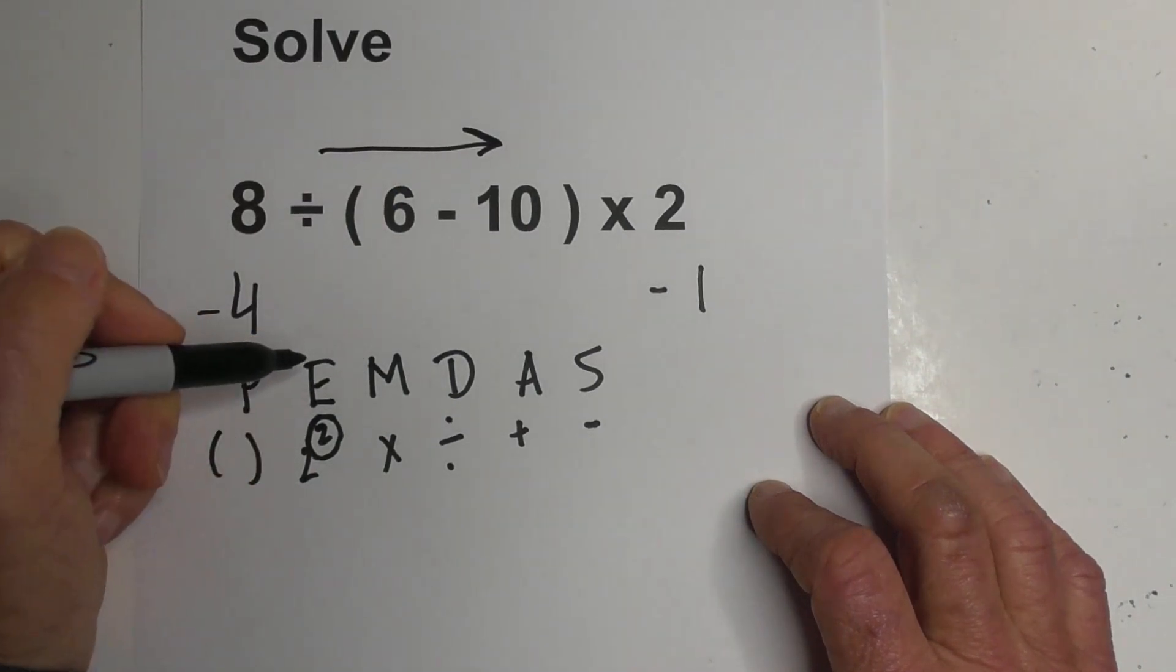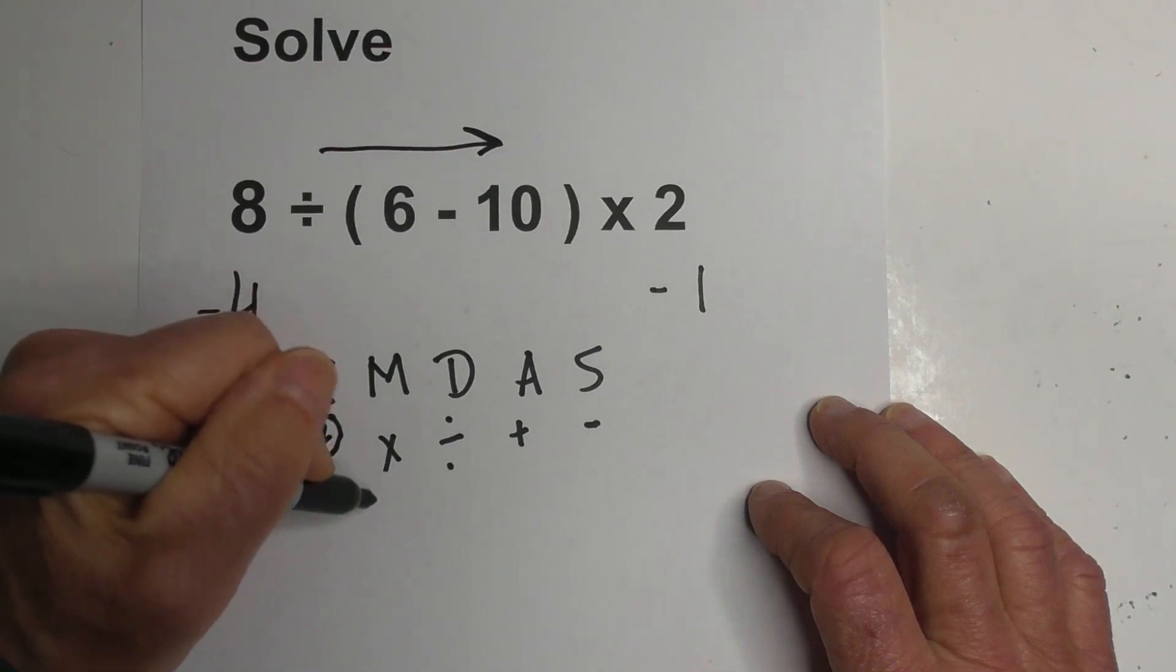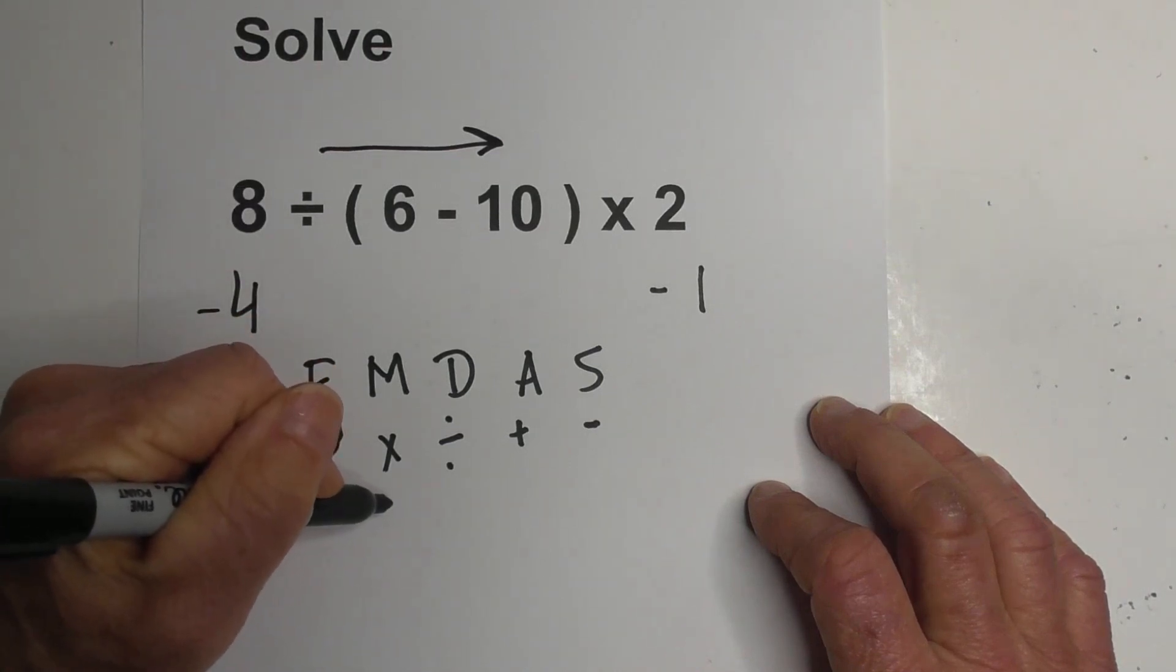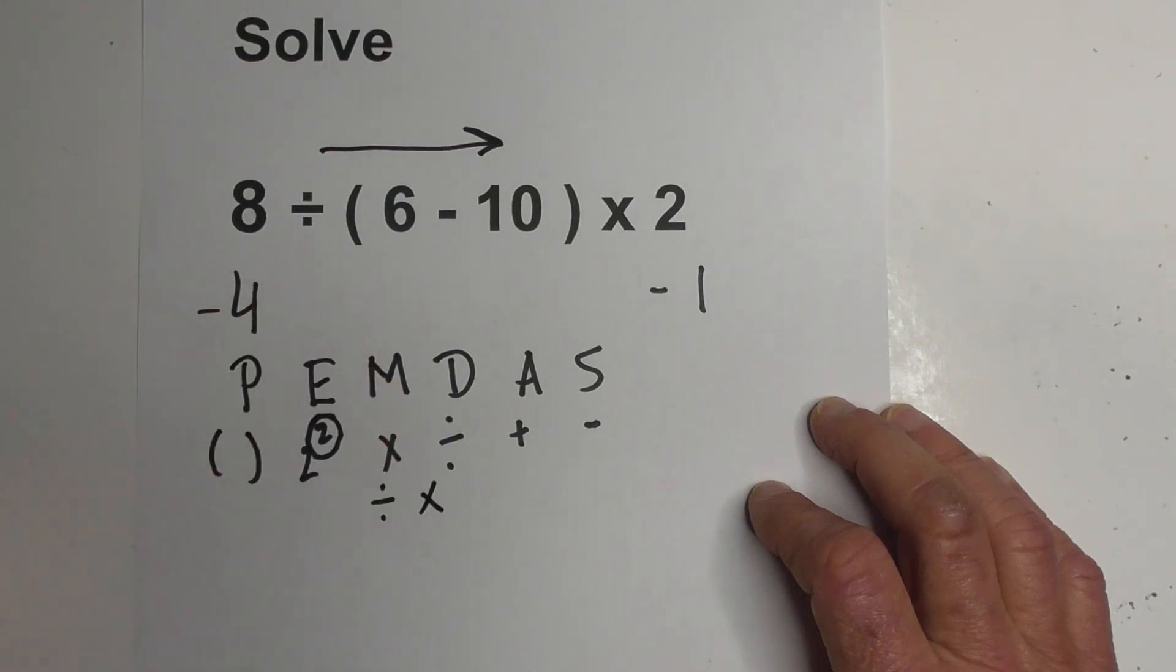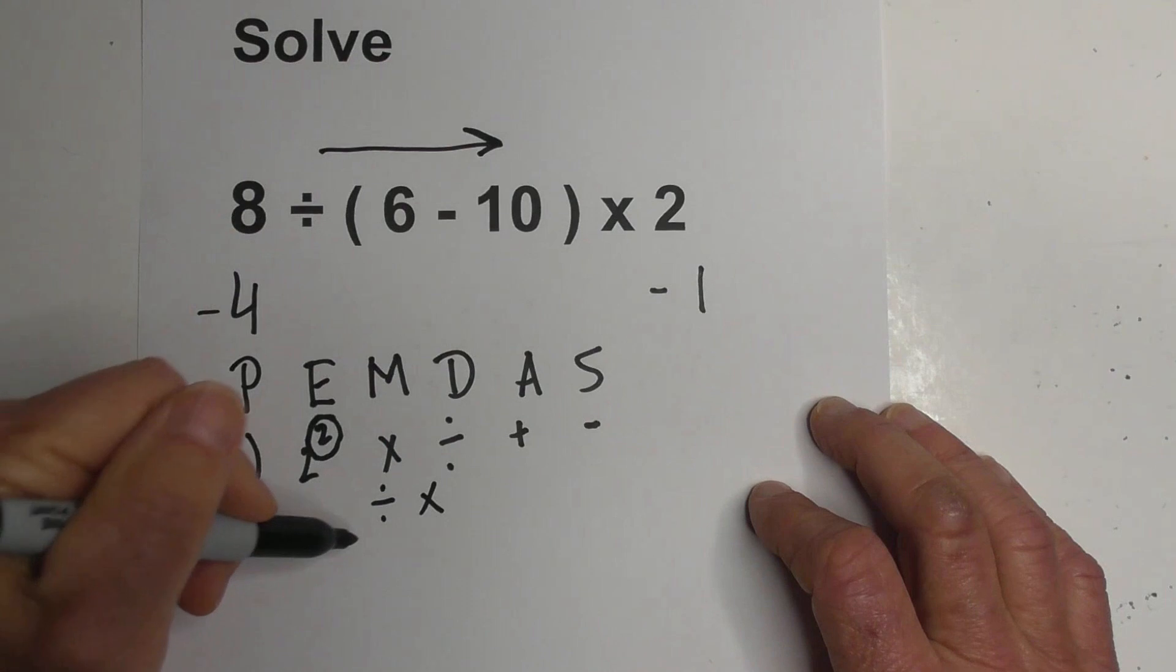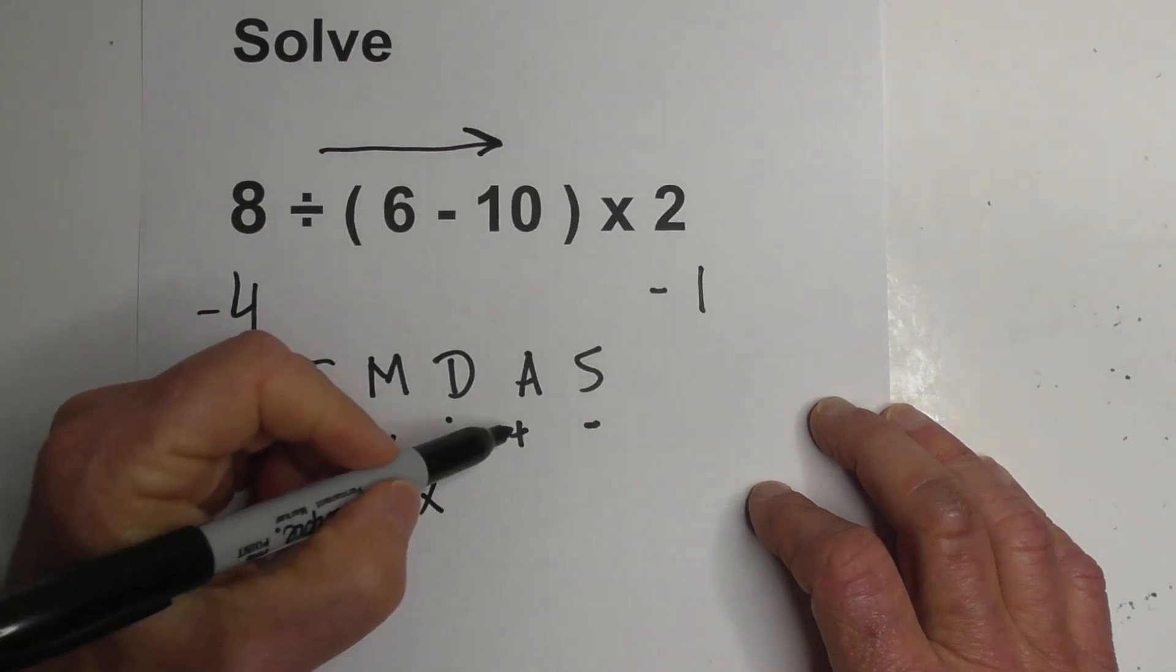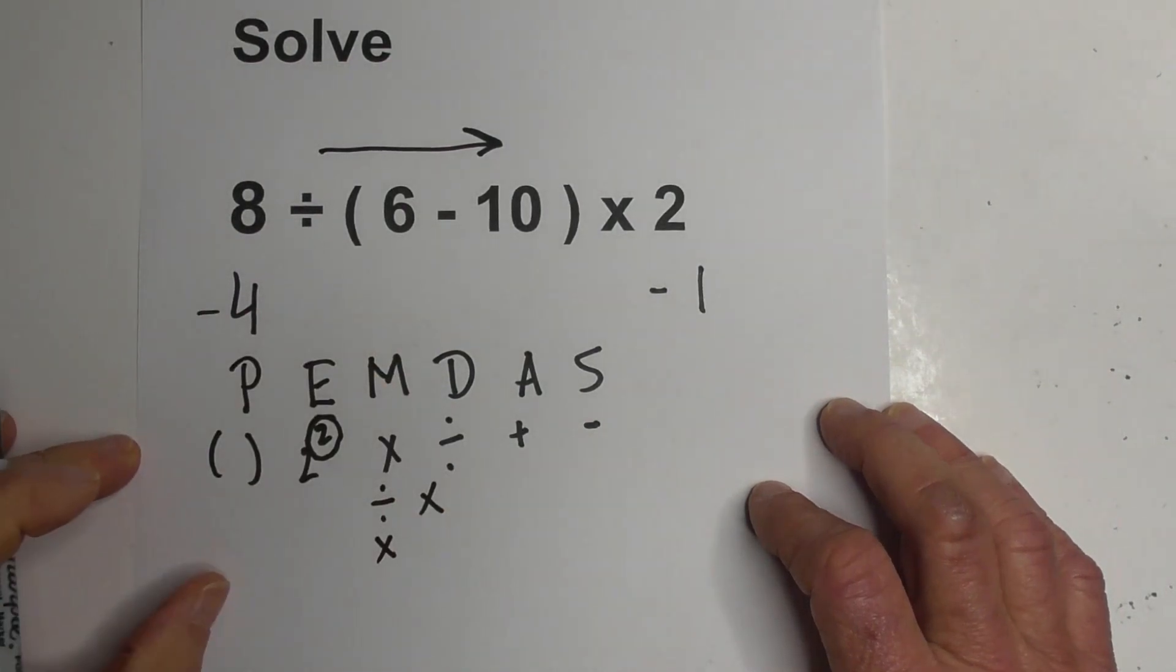So if division comes first, like here, then you do division first. You would do division, then maybe if you have some multiplication, you do multiplication. Or if multiplication comes first, you go multiplication.